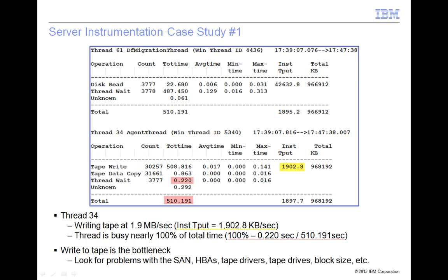This calculation yields a write size of 32 kilobytes. This is small and could be increased by adjusting the TXN byte limit and the TXN group max options on the TSM client and server. See the TSM Optimizing Performance Guide for recommended settings.